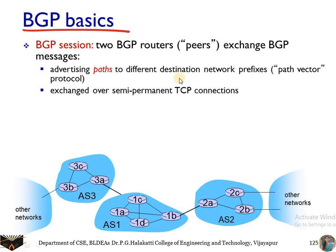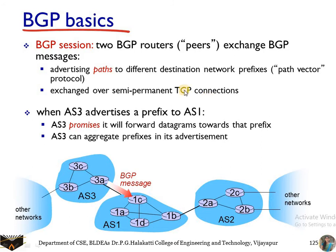BGP works on the basis of BGP sessions. Two BGP routers communicate through BGP messages. The first function is advertising paths to different destination networks through prefixes, using the path vector protocol. This is exchanged over a semi-permanent TCP connection, as we can see in the example here.